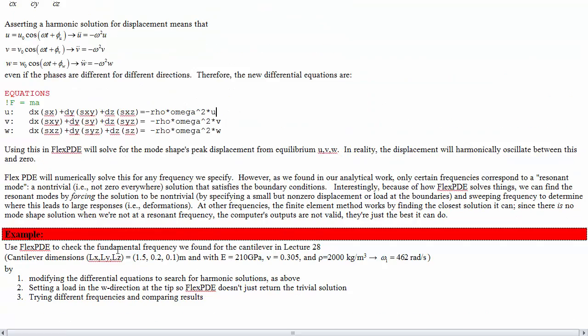Here's an example. Let's use FlexPDE to check the fundamental frequency we found for the cantilever in lecture 28. Here were the cantilever dimensions and properties. We found that the first resonant mode was 462 rads per second. The approach: modify the differential equations to search for harmonic solutions, set a load in the W direction at the tip so that FlexPDE doesn't return the trivial solution, and then try different frequencies and compare results to see where you can get a large displacement.